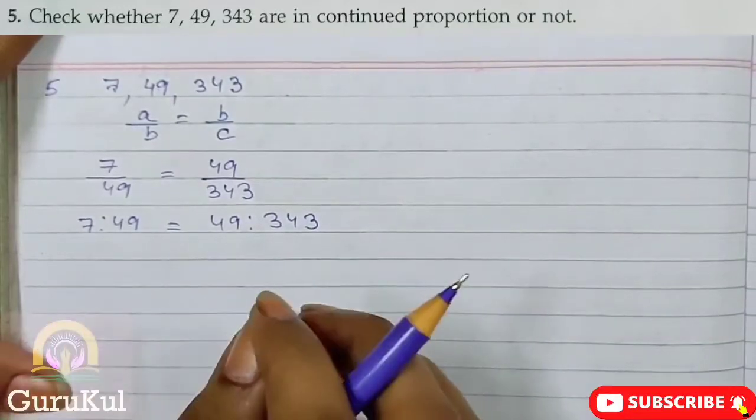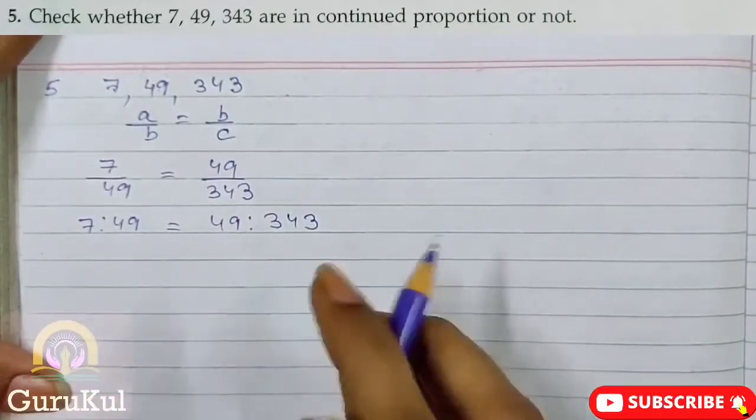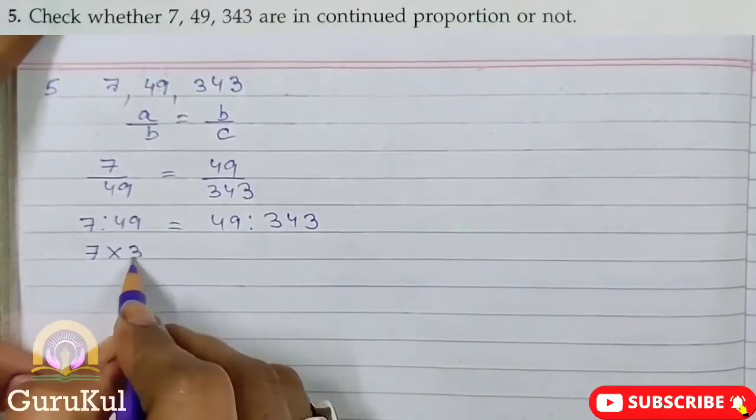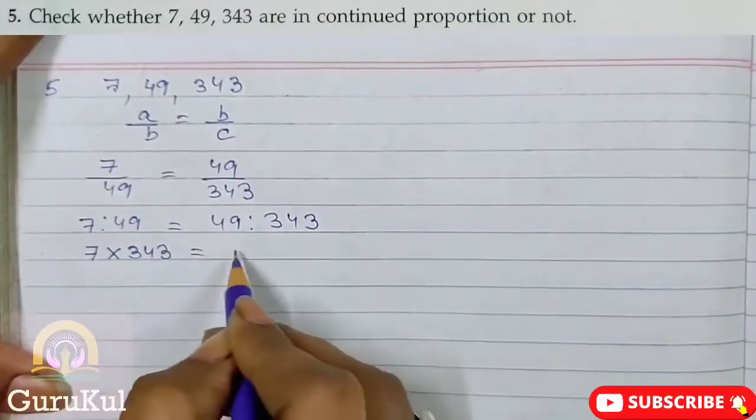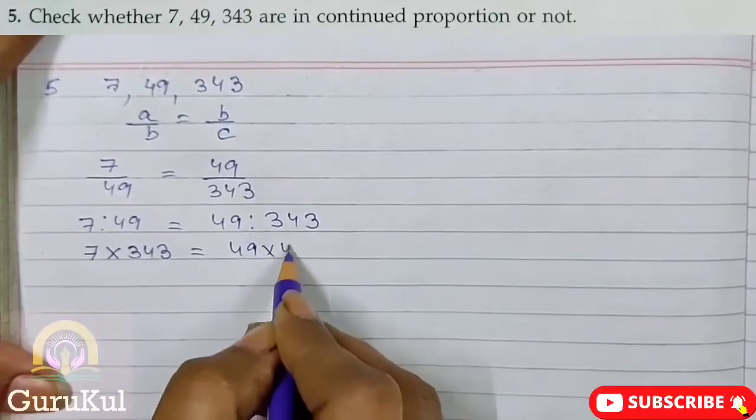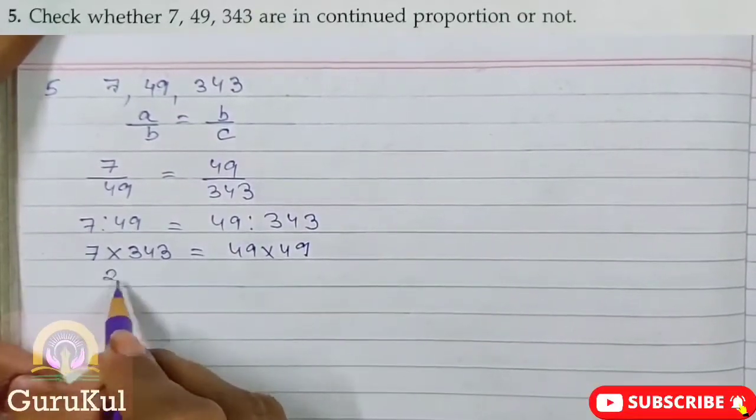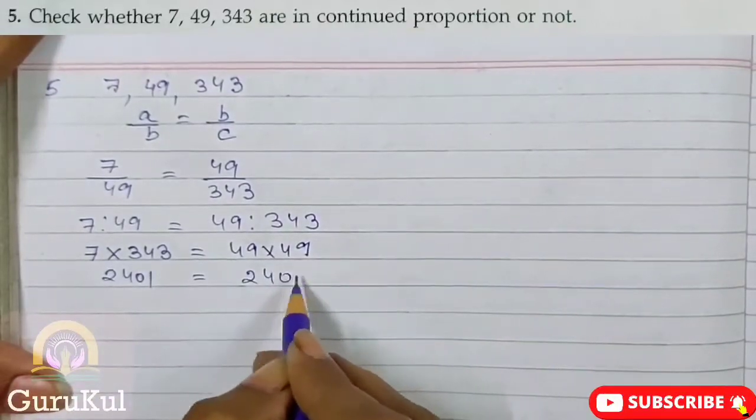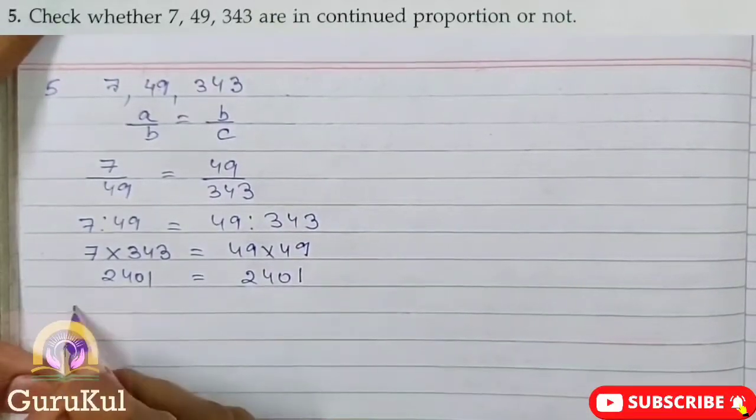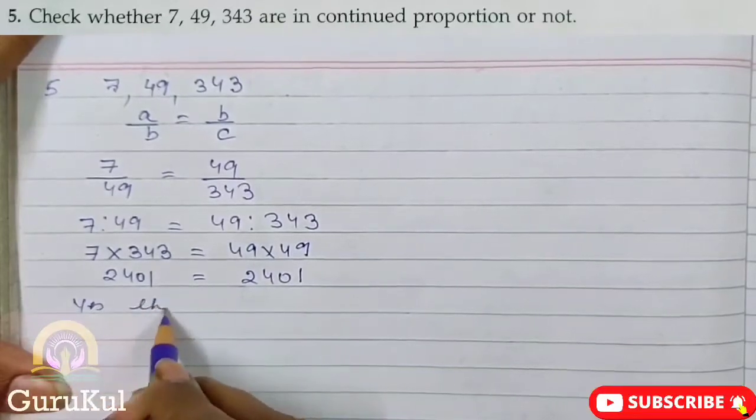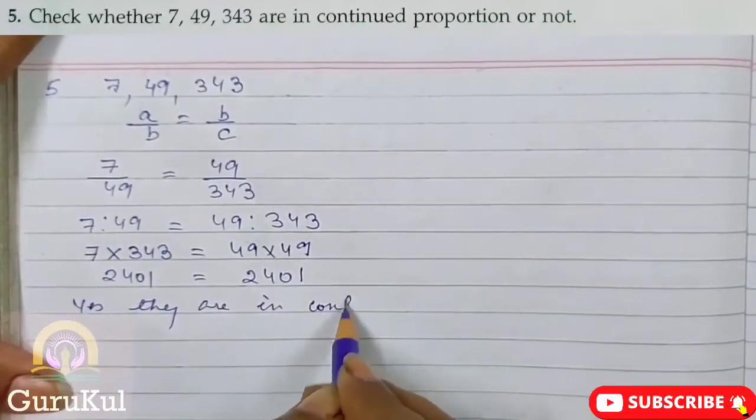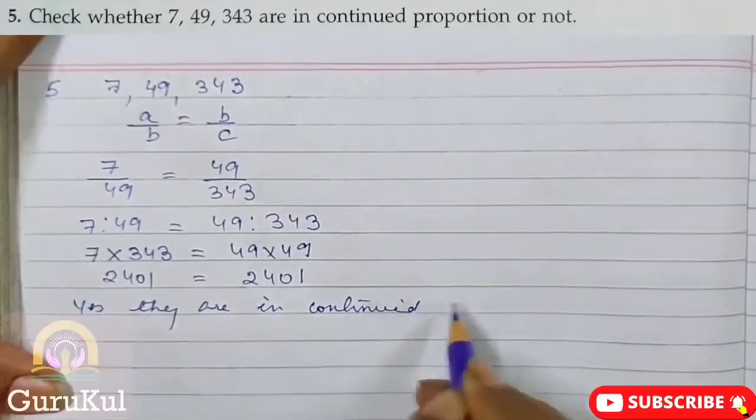Product of extremes is equal to product of means. So 7 into 343 is equal to 49 into 49. This gives us 2,401 is equal to 2,401. So yes, they are in continued proportion.